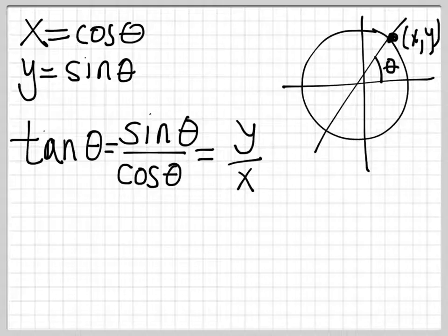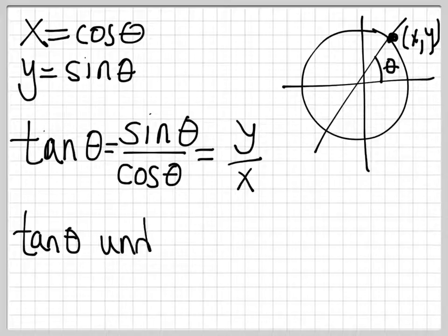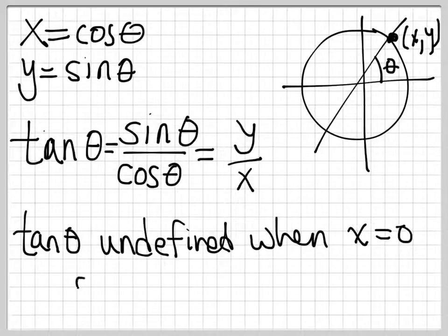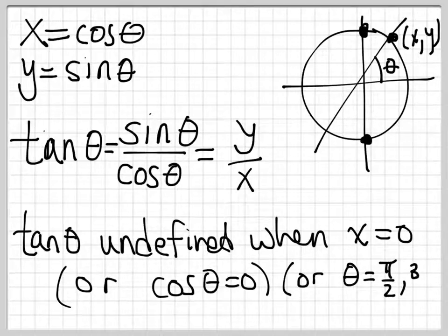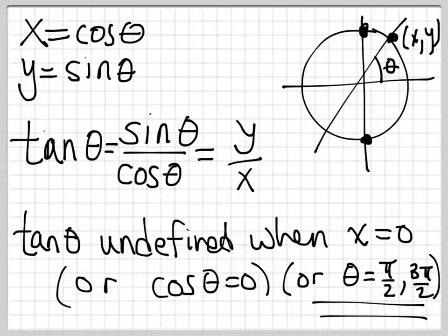So let's talk about a bunch of properties of tangent, some things that can go wrong. One thing you should notice is that tangent is a fraction. And so tangent of theta is undefined when x equals zero, or when cosine of theta equals zero. Well, x is zero up top and down below, and that's pi over two and three pi over two. So this is really important. Tangent is not defined at all when x is zero, or cosine theta is zero.